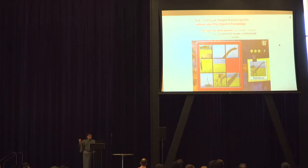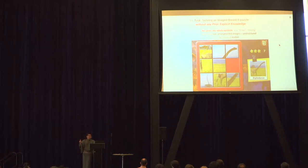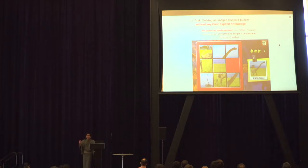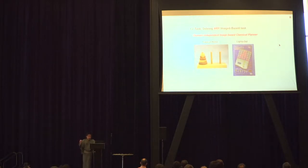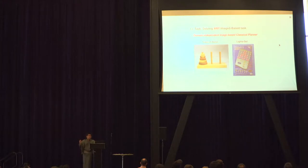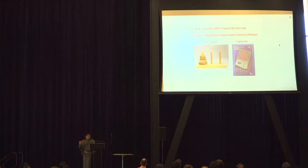Our task is to solve an image-based eight puzzle without providing any prior explicit knowledge — no symbols like the nine tiles or knowledge that tiles can move. Only raw, unsegmented, unstructured images are given. Because we don't have any assumption about the environment, the system should be able to solve any planning task, including the Tower of Hanoi or the game Lights Out. The system is essentially a domain-independent but image-based classical planner.